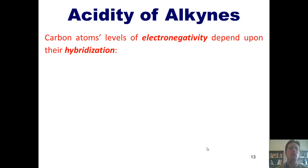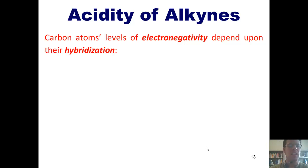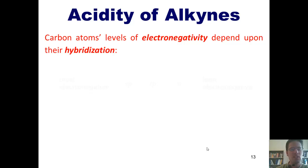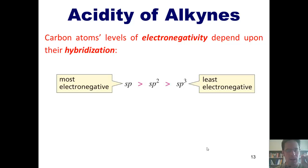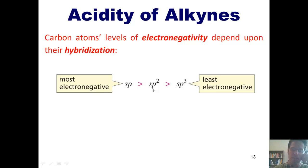Now to a different subject: acidity of alkynes. Carbon atoms' individual levels of electronegativity actually vary depending upon their hybridization. SP hybridized carbons are more electronegative than SP2 hybridized carbons, which are more electronegative than SP3 hybridized carbons.